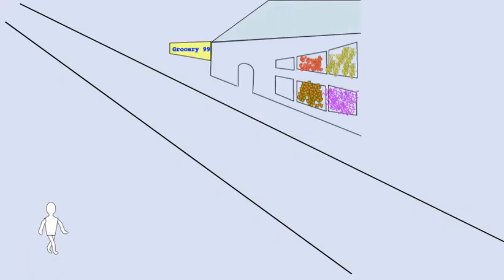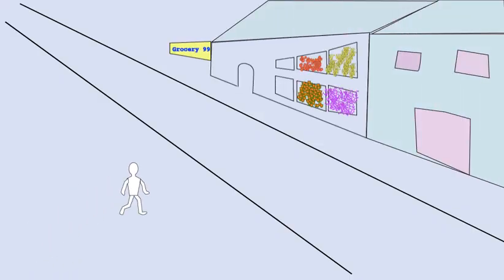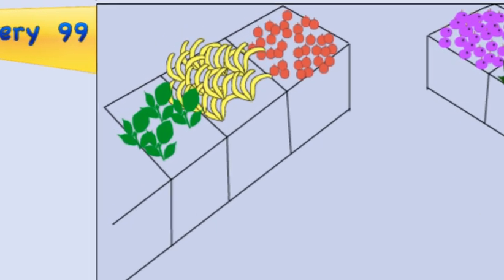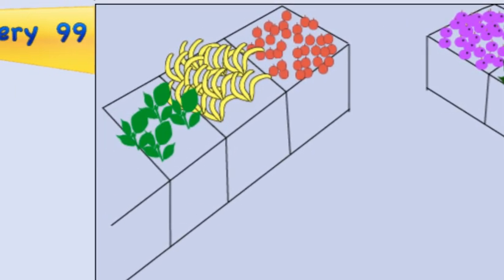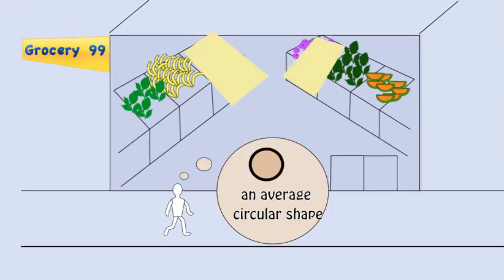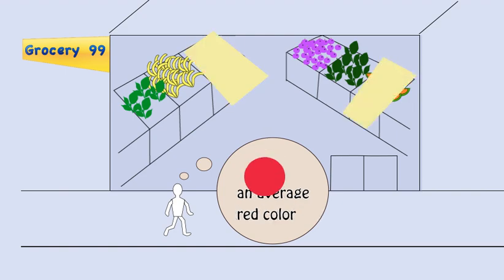Let's take another example. Sam is standing on a corner and sees a store display across the street. Sam wants to know if the store is selling tomatoes, so he can make a spaghetti dinner tonight. He scans the store window. Immediately, his visual system calculates items inside the window, and they are an average circular shape.